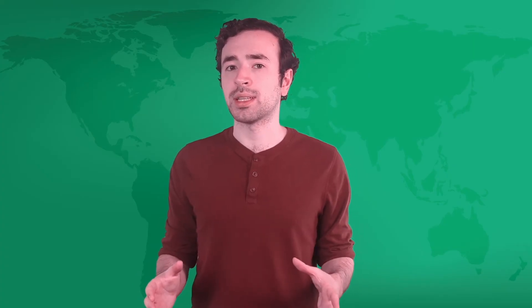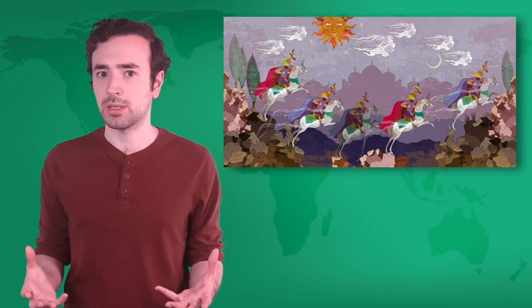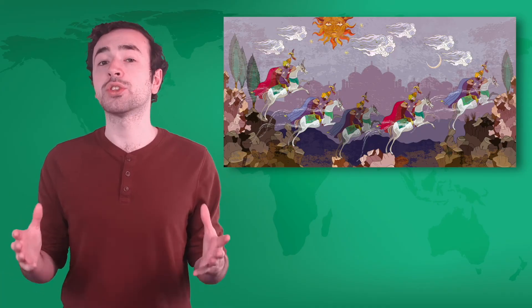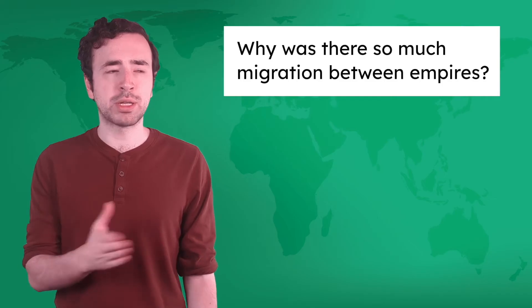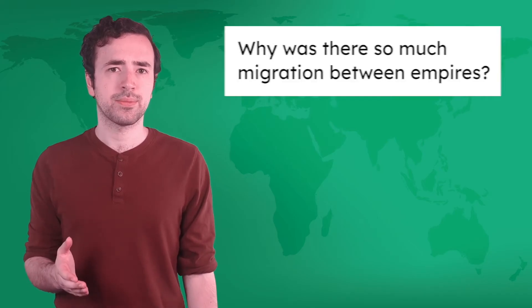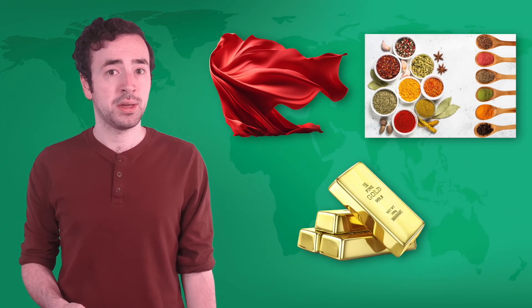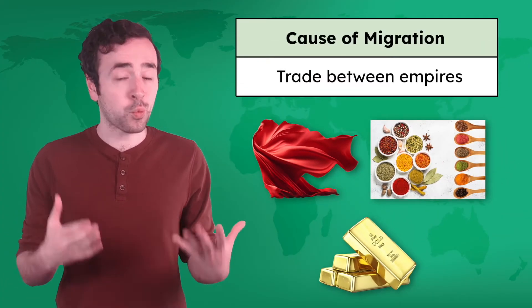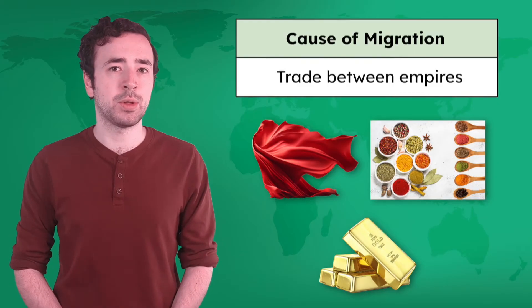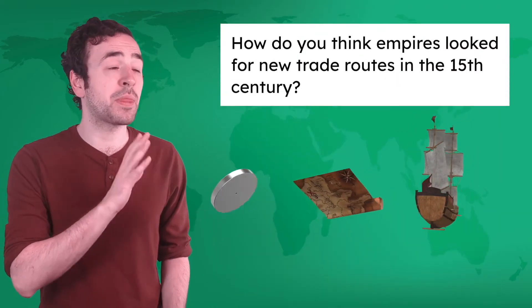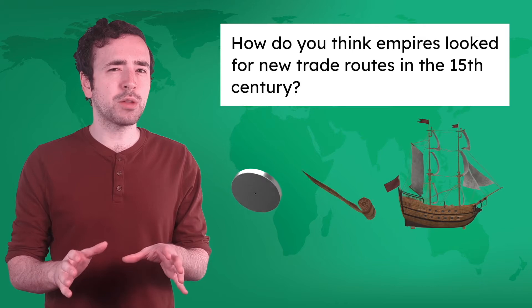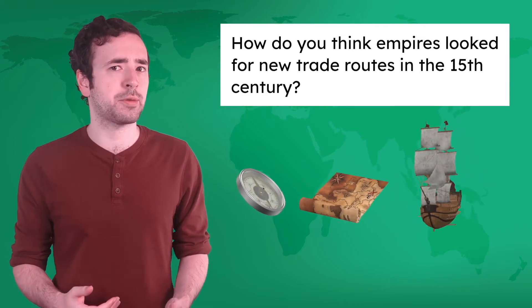As civilizations grew in power and expanded their territories, they became empires. And as empires grew, so too did migration between them. Empires built their wealth by trading valuable items like silk, spices, and gold, and people needed trade routes to make this trading possible. Take a look at technologies from the 15th century to see if you can predict how empires looked for new trade routes.